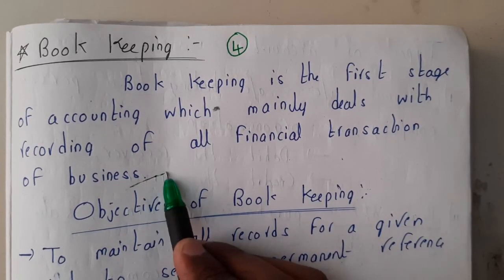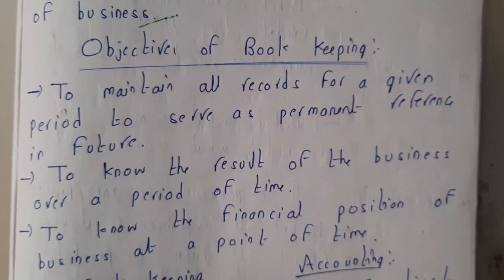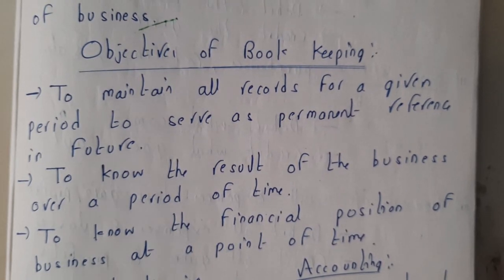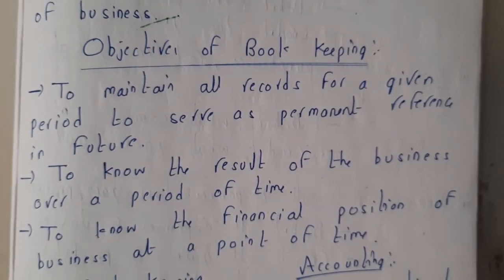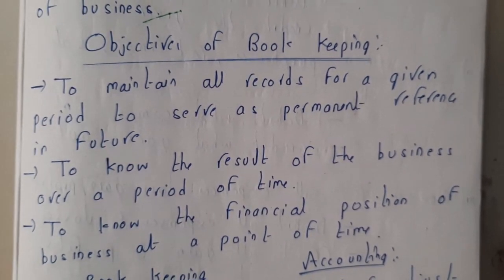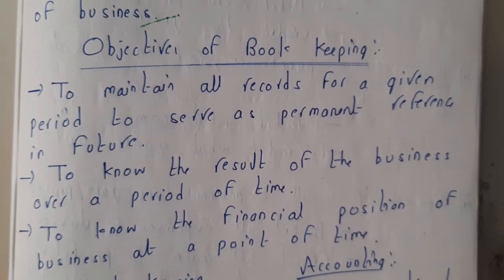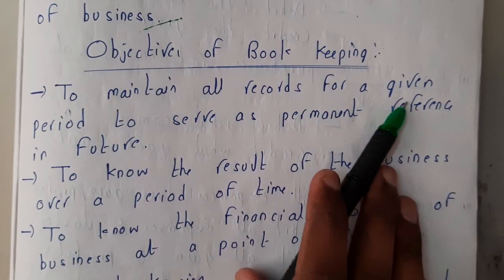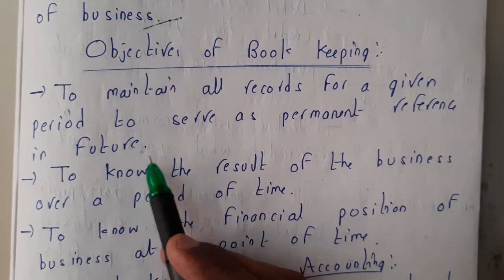The objectives of bookkeeping are almost similar to accounting. In accounting, you will be storing all those things and calculating many things like what is the profit, how much you spend, and everything like that. Here in bookkeeping, we maintain all the records for a given period to serve as a permanent reference in future.